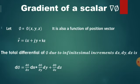Let phi be a function of x, y, z, and it is also a function of position vector r, where r equals ix plus jy plus kz. The total differential of phi due to infinitesimal increments dx, dy, dz is d phi equals curly phi by curly x dx plus curly phi by curly y dy plus curly phi by curly z dz.